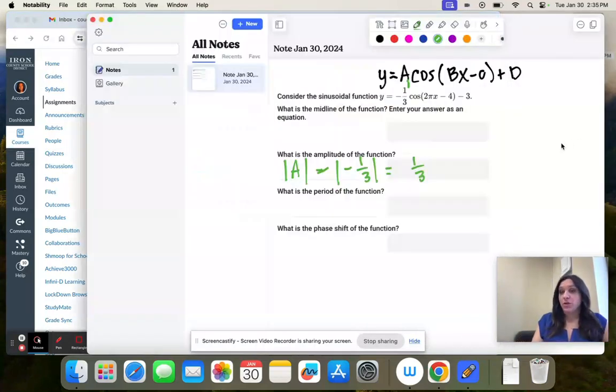And then we'll just go through the rest of the letters. So b is what's next to x. It's two pi. C is four. So remember the negative is part of the function. We're just taking the number. And then d, we do take the sign with it. It is negative three.